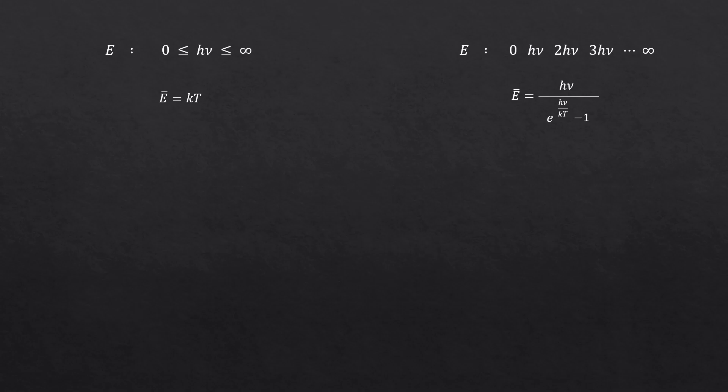When energy was a continuous variable, our mean energy was kT. But when it was a discrete variable, the mean energy was h nu over e to the h nu over kT minus 1.